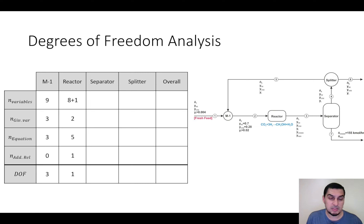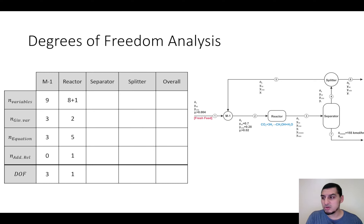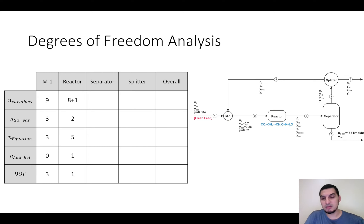If you use the atomic balance method for the reactor, the number of variables would be eight (no extent of reaction) and the number of equations would be four — hydrogen, carbon, oxygen, and inerts — so it's eight minus four or nine minus five, which produces the same result: degrees of freedom equals one. For the separator, there are ten variables, one given variable (the moles of methanol in the product), five equations, and no additional relations, giving four degrees of freedom.